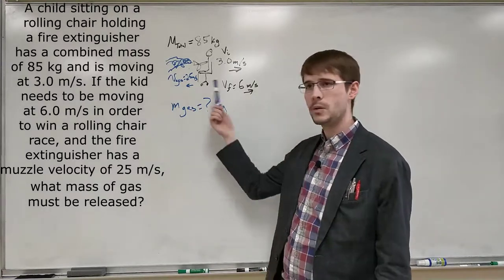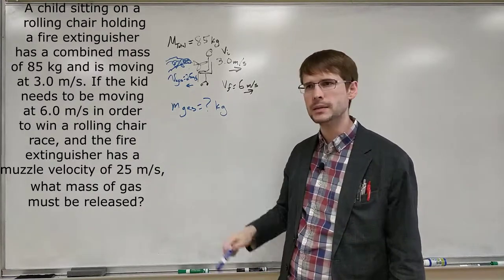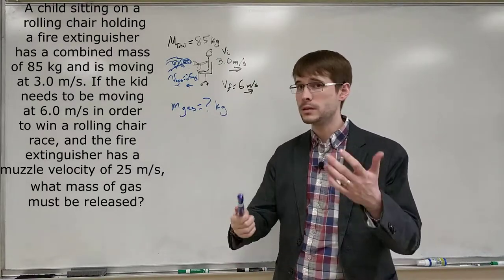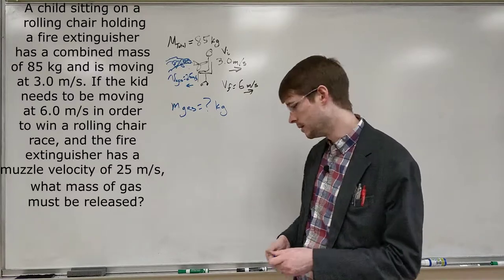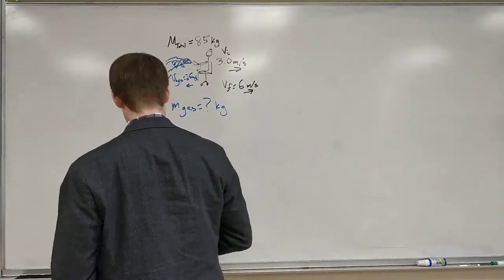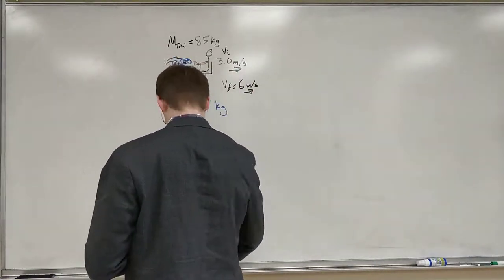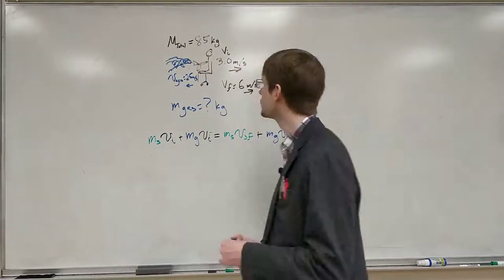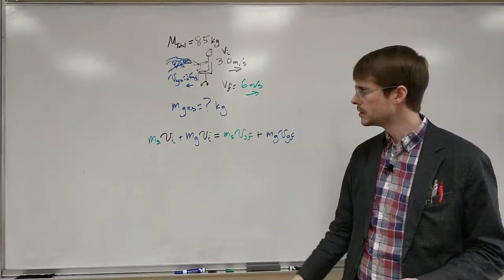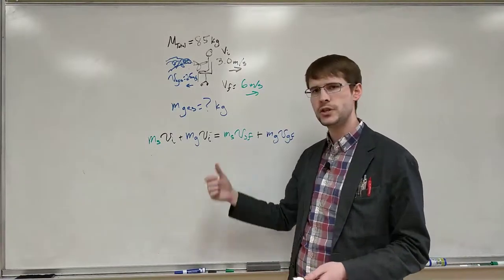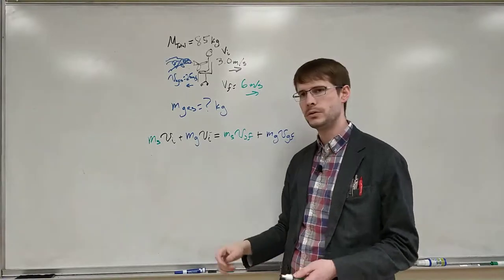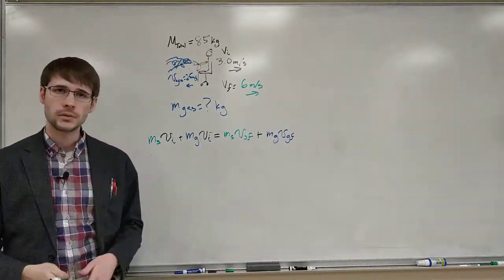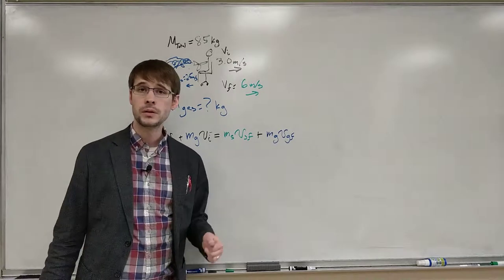And what we need to know is also keeping track of some of these signs, positives and negatives. And so we're going to start off by doing our big conservation of momentum equation that we've now know and love. All right, so here we go. I've got some of the things in green that refer just to the student, things in black that refer to the student and the gas, things that are in blue are just the gas.